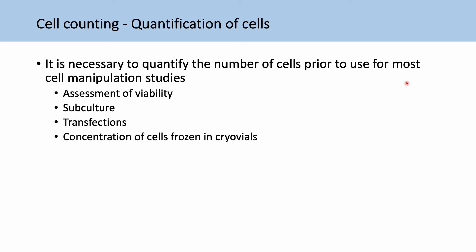When we're freezing down our cells, we need to put a certain amount of cells within the cryovial so that when we're thawing it out later, we know how many cells there should be.